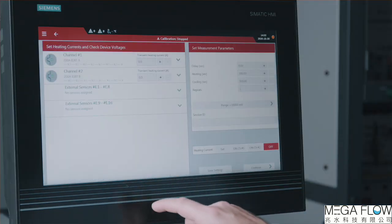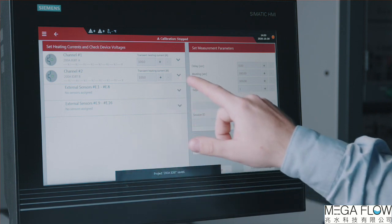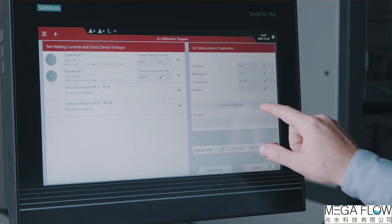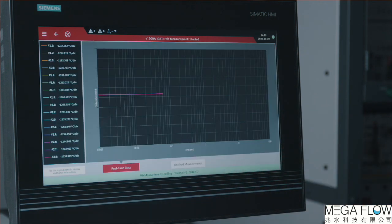Thermal transient measurement can be initiated by selecting the setup RTH measurement function. The desired heating current level and the measurement timing parameters need to be filled. You can freely configure heating and cooling time. By clicking continue, the measurement will start. First, the system heats up the device, then after the set heating time, the heating is turned off and the thermal transient is measured.